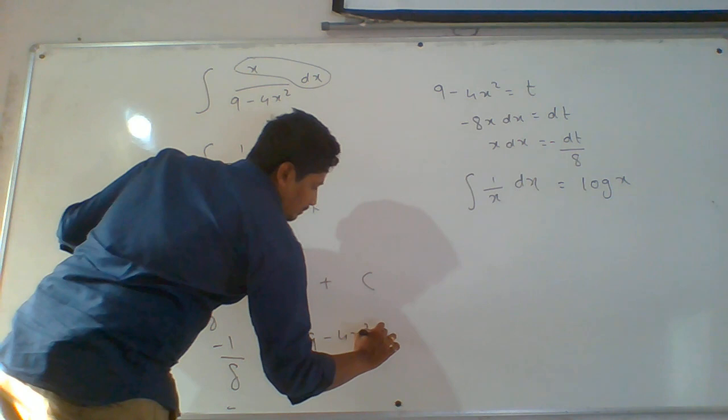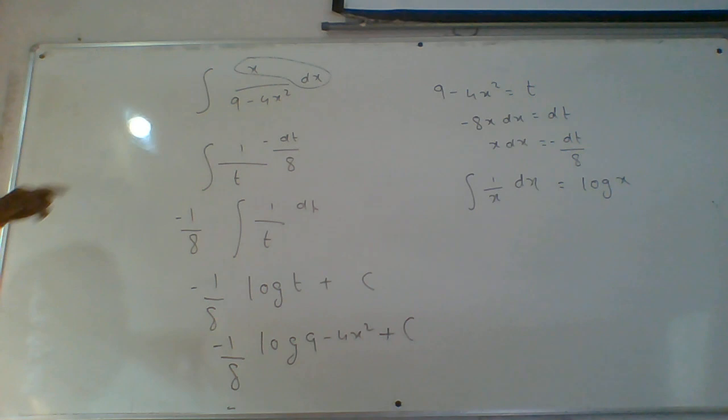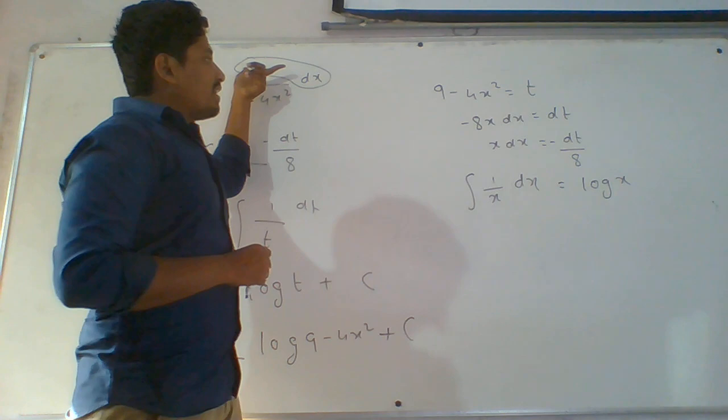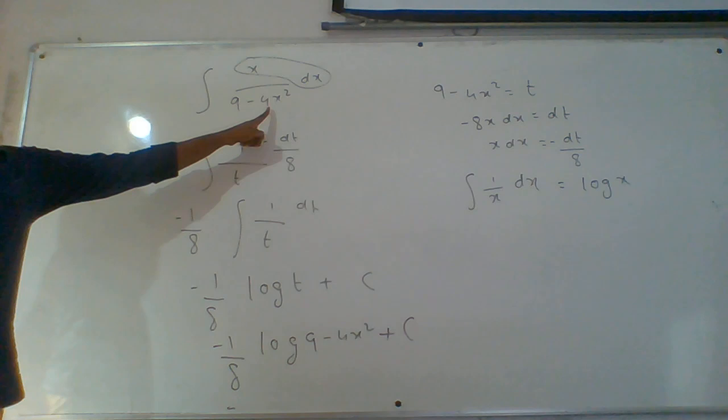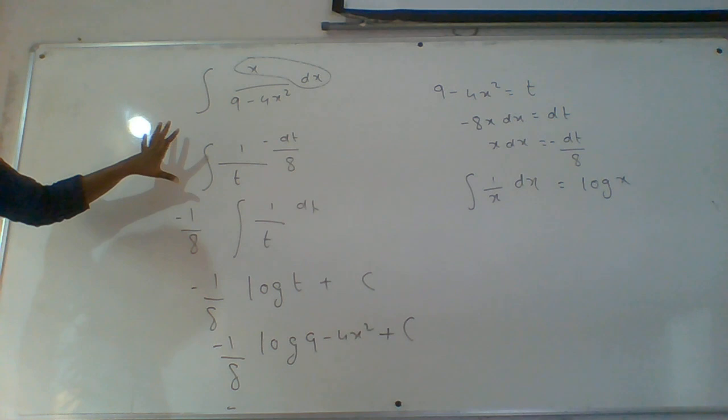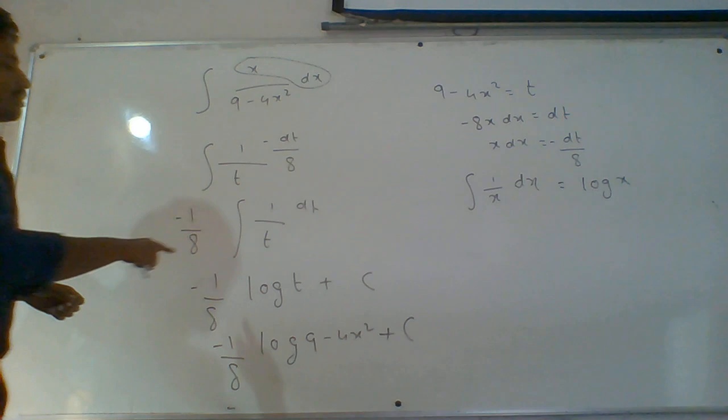See the stepwise process. While substituting something as t, we get exactly what is required. If there is a difference in constant, we can adjust. In the place of x dx we substituted minus dt by 8, and in the place of 9 minus 4x square we substituted t. The total function is now converted from x into t, making it easy for integration.